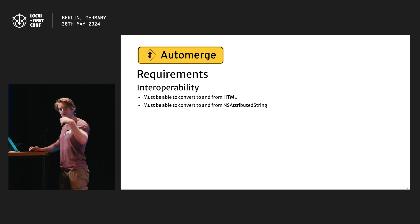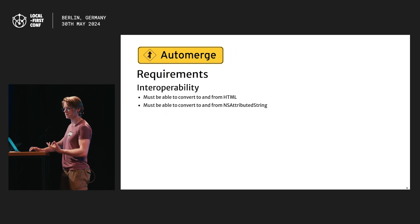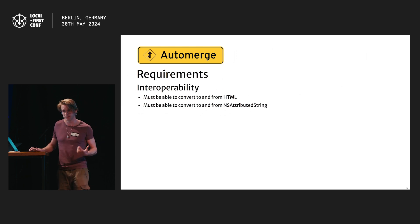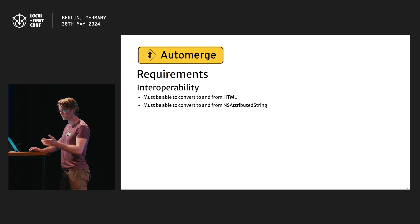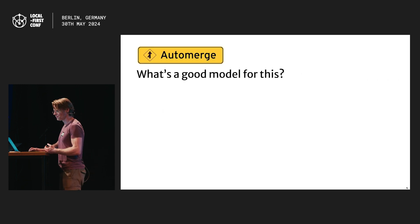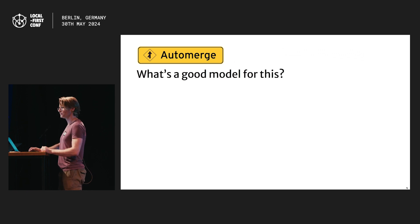Another requirement we had was that this should be interoperable. It's quite a lot of work to come up with a good model for this, and we don't want to have to repeat it across every platform. But we also want Automerge to be ubiquitous — we want people to be able to build rich text experiences easily on many platforms. So our two targets here are HTML and NSAttributedString, because GoodNotes are operating in a Swift iOS environment, but also targeting the web.